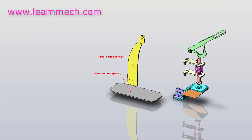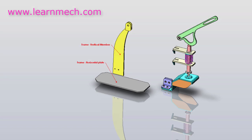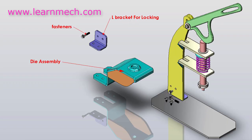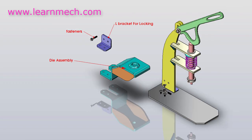This simple machine consists of a frame made up of steel plates. The horizontal and vertical frames are welded together. The die assembly is fixed with the frame using brackets and screws.